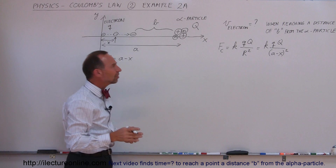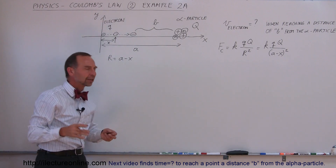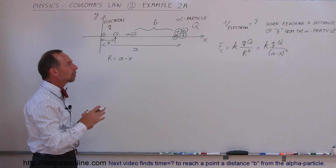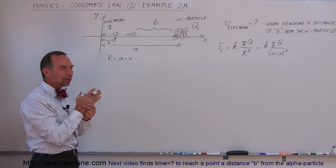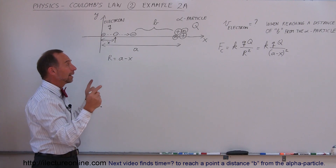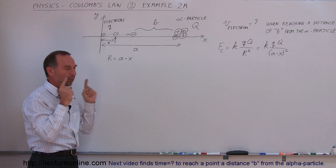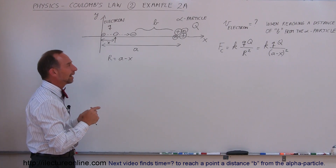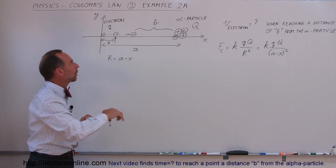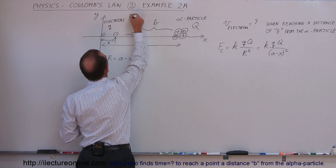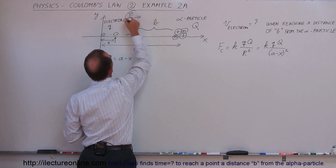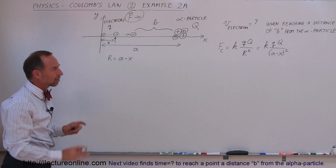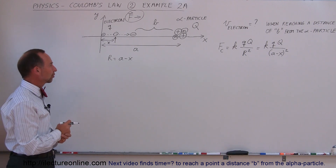You may ask: isn't the charge on the electron negative and the charge on the alpha particle positive? Yes, but we don't need to worry about that. We simply know that the force is proportional to the product of the magnitude of their charges, and we know the force is directed to the right, so we don't need to worry about the negative sign — we simply want the magnitude of the force.